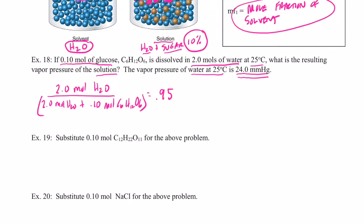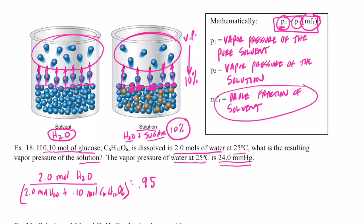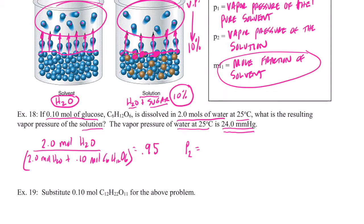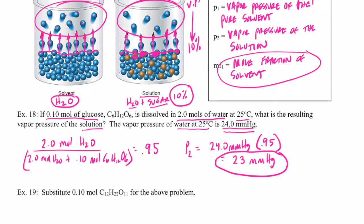Using the equation: P₂ = P₁ × MF₁ = 24.0 mmHg × 0.95 = 23 mmHg to two significant figures. That's lower than the vapor pressure of the pure solvent — and that's exactly what we expected.